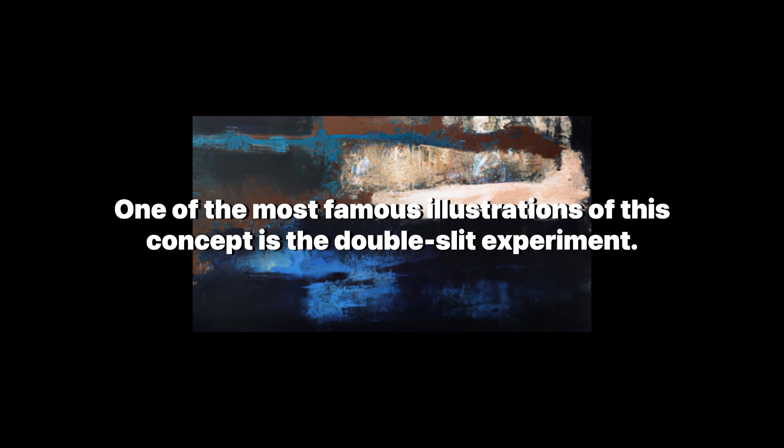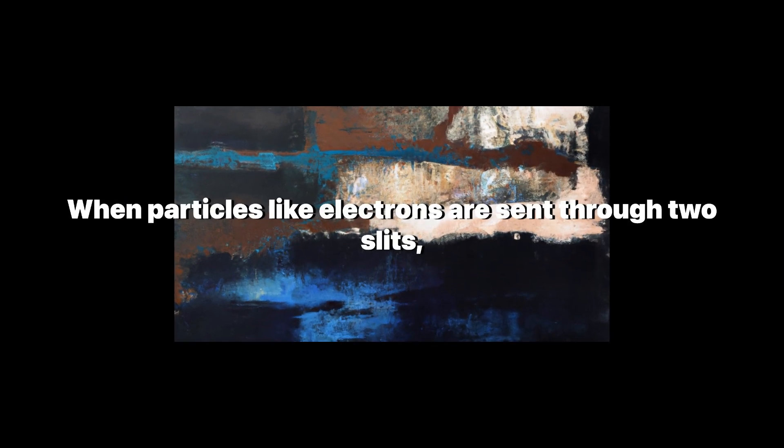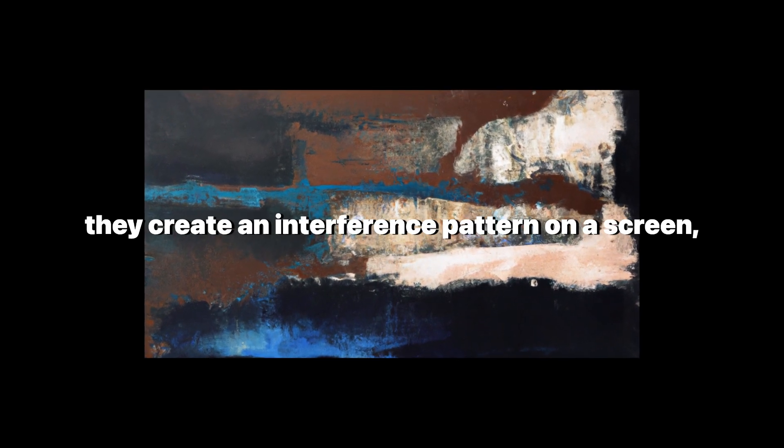One of the most famous illustrations of this concept is the double-slit experiment. When particles like electrons are sent through two slits, they create an interference pattern on a screen, as if they are waves.